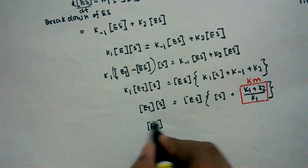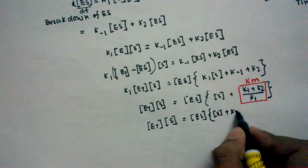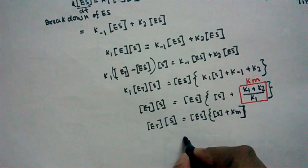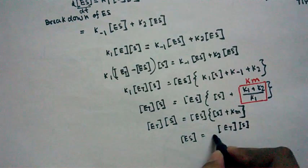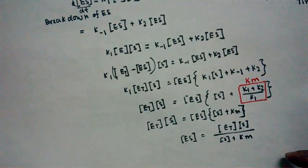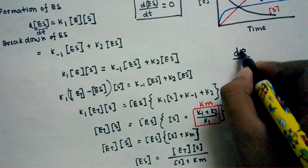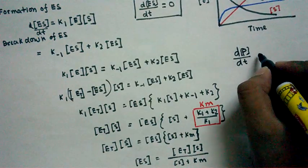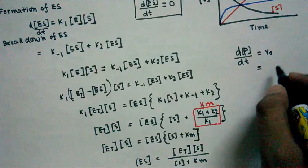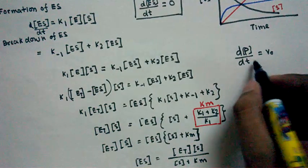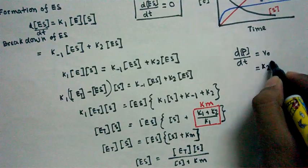We can now write: [E]t·[S] = [ES]·([S] + Km), so [ES] = [E]t·[S] / ([S] + Km). The rate of product formation with respect to time is considered the velocity of the enzyme reaction, and it depends solely on the breakdown of the enzyme-substrate complex, giving: v = k2·[ES].